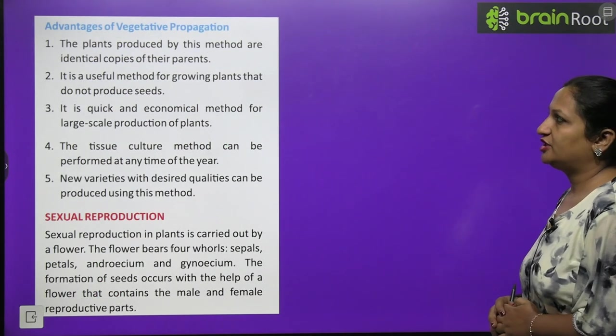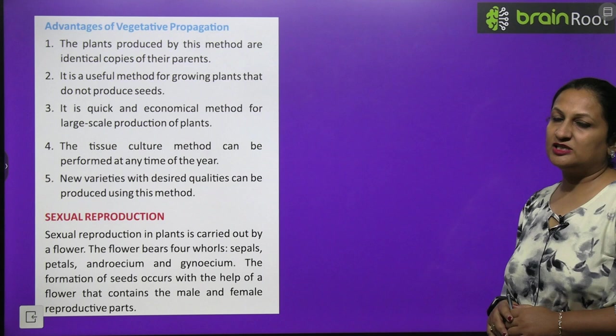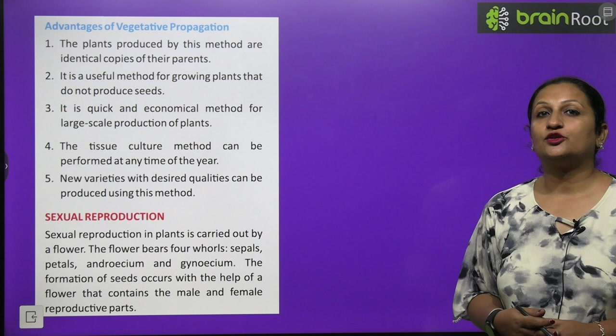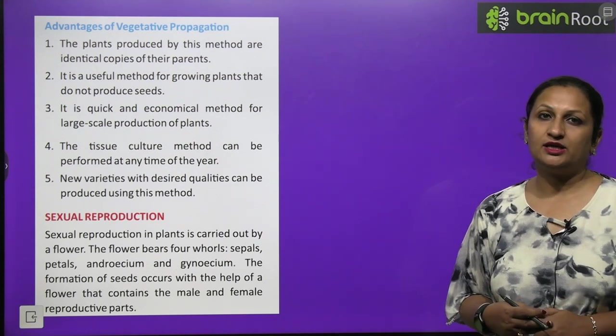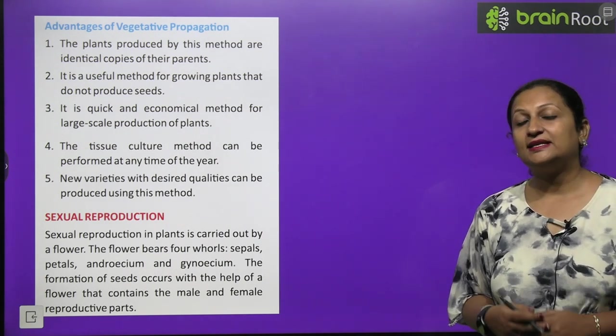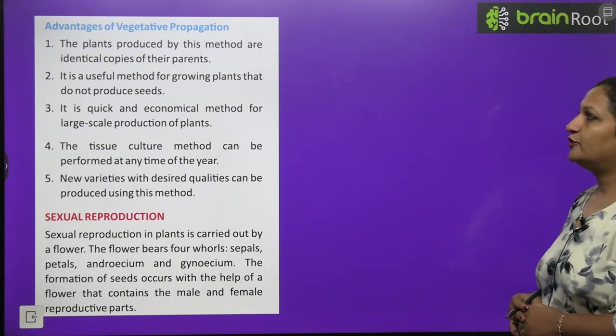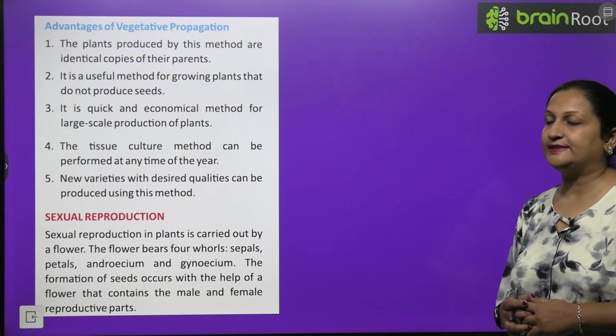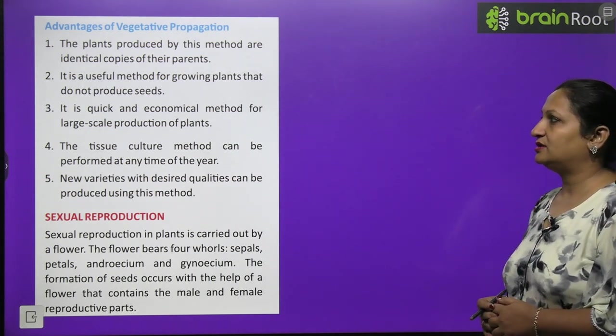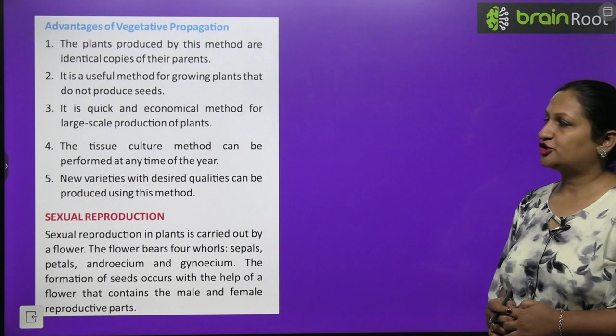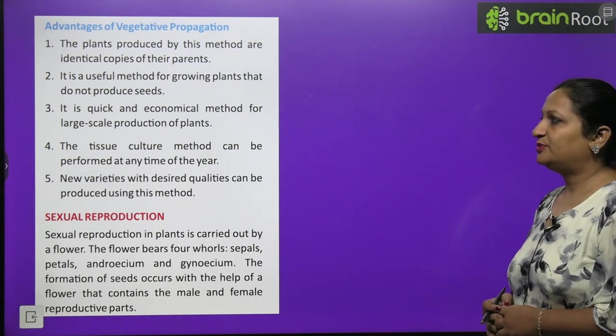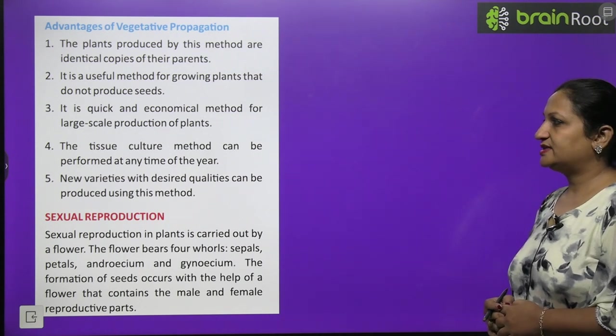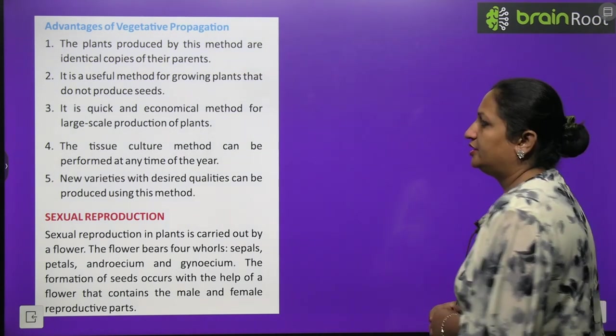Advantages of vegetative propagation children. The plants that are produced from their parents are the exact copy of their parents. It is a useful method for growing plants that do not produce seeds. So we can grow seedless plants easily. It is a quick and economical method for large-scale production of plant. Tissue culture method can be performed at any time of the year. New varieties with desired qualities can be produced using this method.